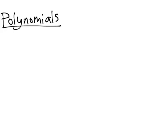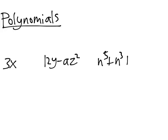Let's look at a few examples to understand what this means. 3x, 12y minus az squared, and n to the fifth plus n cubed plus n plus 1 are all examples of polynomials.